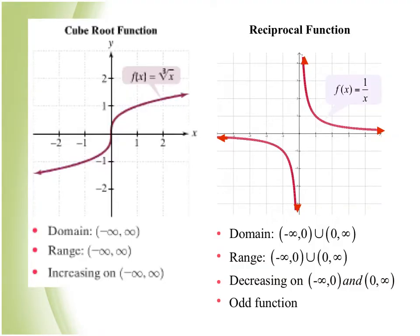The cube root function almost looks like a square root pointing to the right, and then flipped over the origin pointing to the left. The reciprocal function — the parent function — starts in the top right corner and bottom left corner, first and third quadrants. That would be 1 over x, with two asymptotes. Both the cube root and the reciprocal function are odd functions because they're symmetric to the origin.